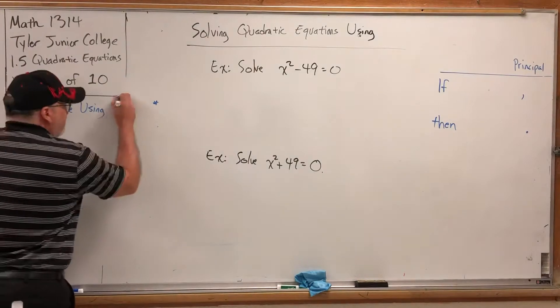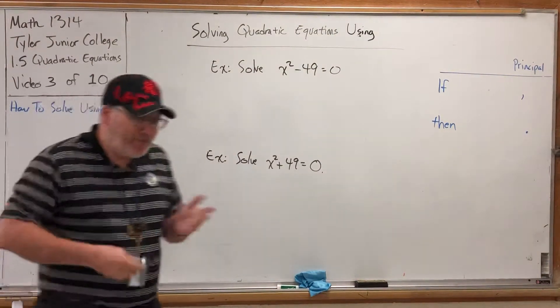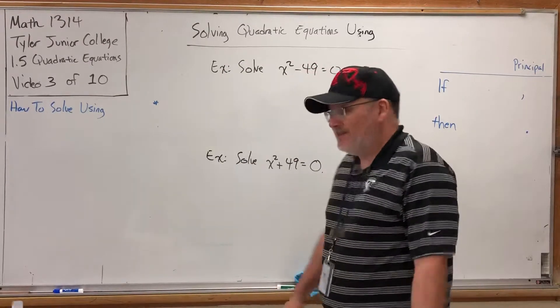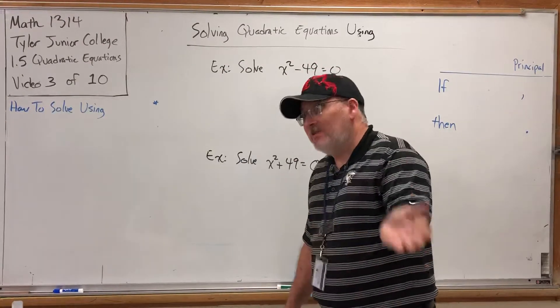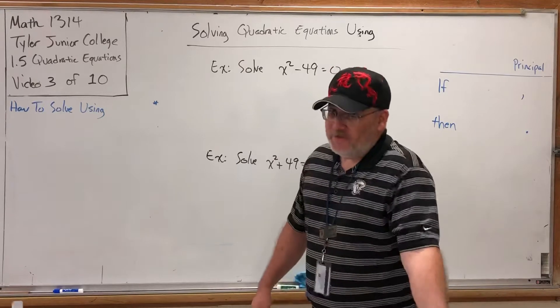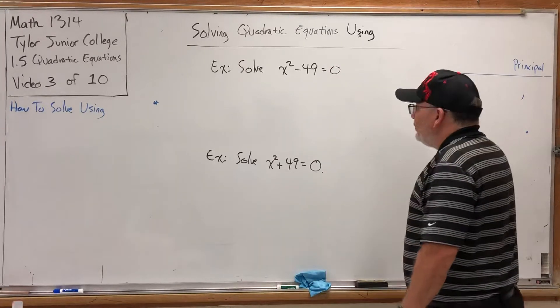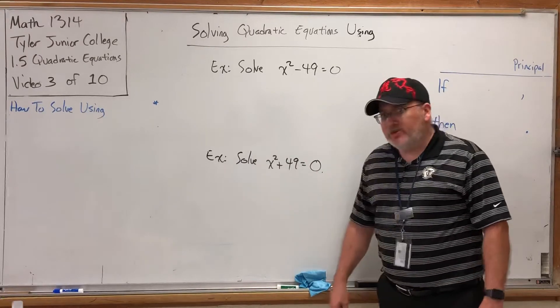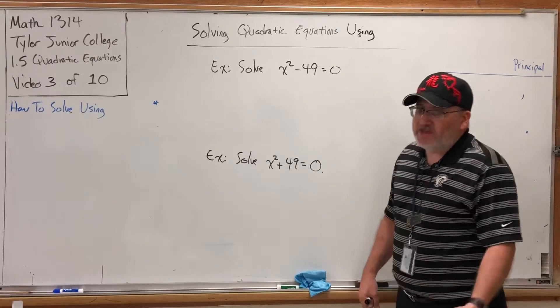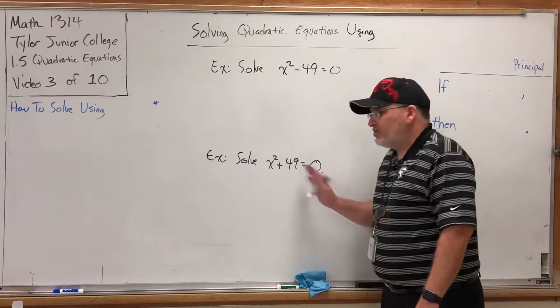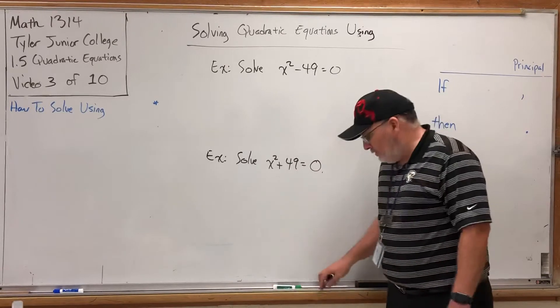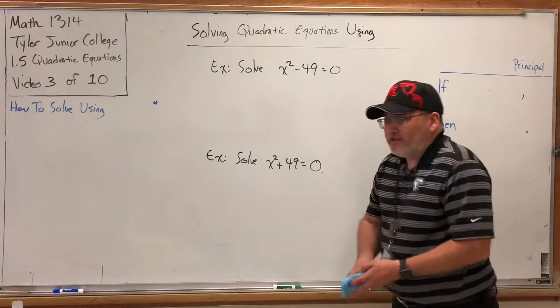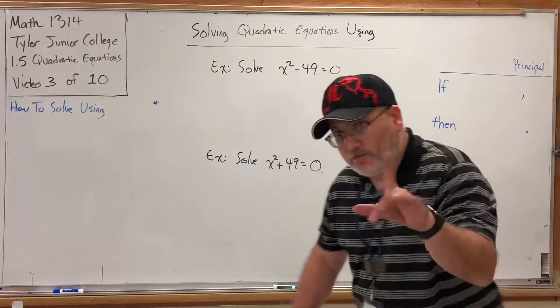In the previous video, I accidentally—and I promise you it was an accident, though in retrospect it was a beautiful transition from solving by factoring to a different technique. We wound up with the equation x² + 49 = 0 and tried to solve it by factoring, and it failed because if you limit yourself to real numbers, this won't factor.